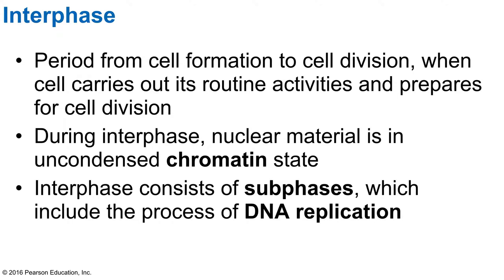During interphase, the nuclear material inside the cell is in an uncondensed form called the chromatin state. When you look at this uncondensed form, it looks like a tangled string spread out all over within the nucleus. Interphase consists of sub-phases, which include the process of DNA replication.